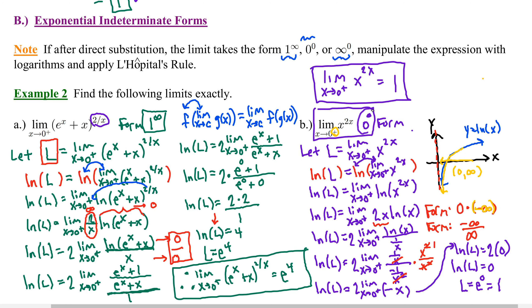In summary: first, if you obtain the indeterminate form 0 over 0 or infinity over infinity, you can apply L'Hôpital's rule—individually differentiate the numerator and denominator, then recalculate your limit to obtain the correct value. Second, if you get an exponential indeterminate form, set your limit equal to a placeholder like L, take the natural log of both sides, and manipulate until you obtain 0 over 0 or infinity over infinity so you can apply L'Hôpital's rule. That completes this video.